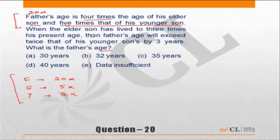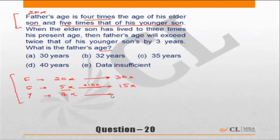When the elder son has lived to three times his present age, that is 15x, then the father's age will exceed twice that of his younger son by three years. The elder son's age has gone from 5x to 15x, so the time elapsed is 10x. When the elder son becomes 15x, the father's age becomes 30x. Similarly, the younger son's age becomes 14x. This is the key point — the time elapsed from 5x to 15x is fifteen minus five, which is 10x.